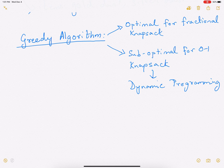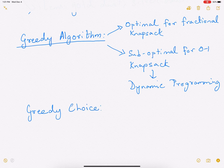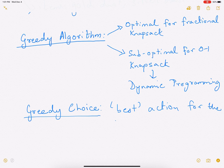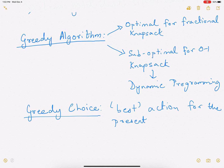So what is a greedy algorithm? This is the first time we're encountering one. Greedy algorithms are very simple — there is always a greedy choice. By their name, greedy algorithms mean you have a bunch of options and you take the option or action which looks best at that moment. You take the best action for the present. This may not be the best action in the long run, which is why they sometimes don't yield the optimal solution.